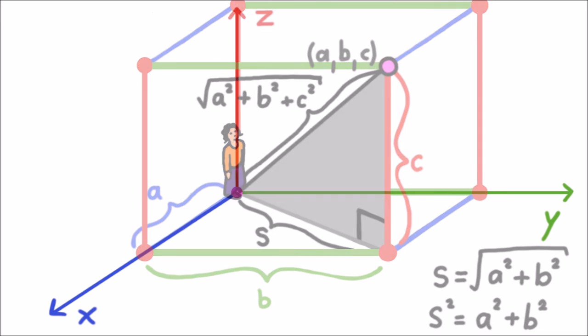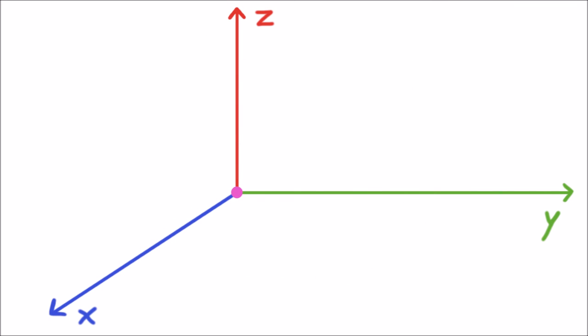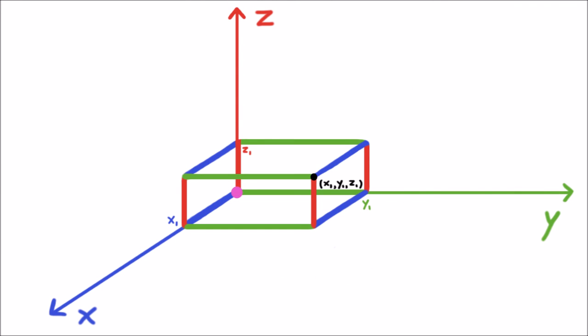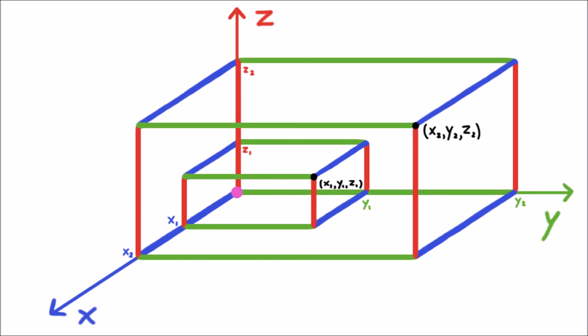This works even if neither point is the origin. Suppose one point is called x1, y1, z1, and the other point is called x2, y2, z2.